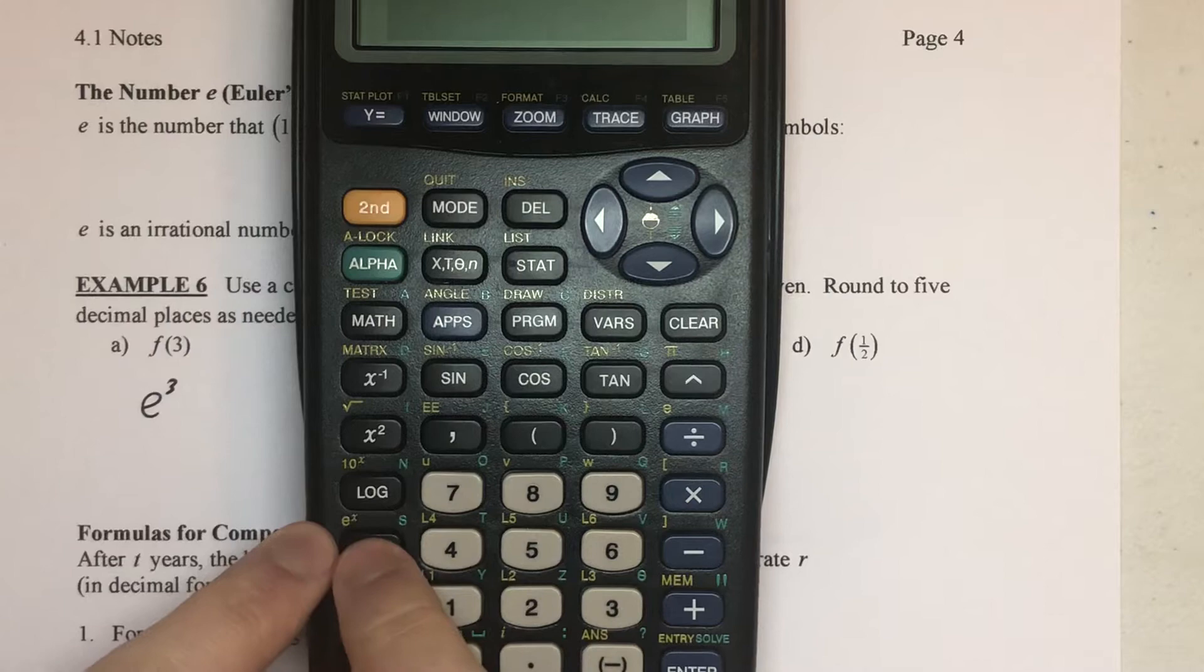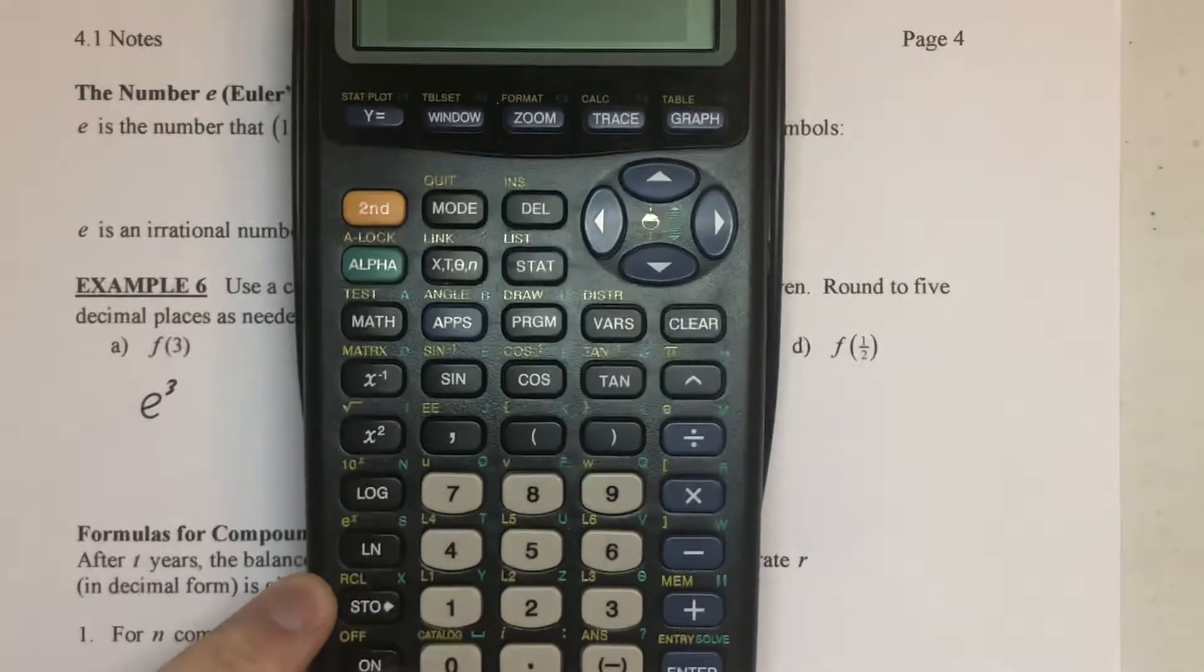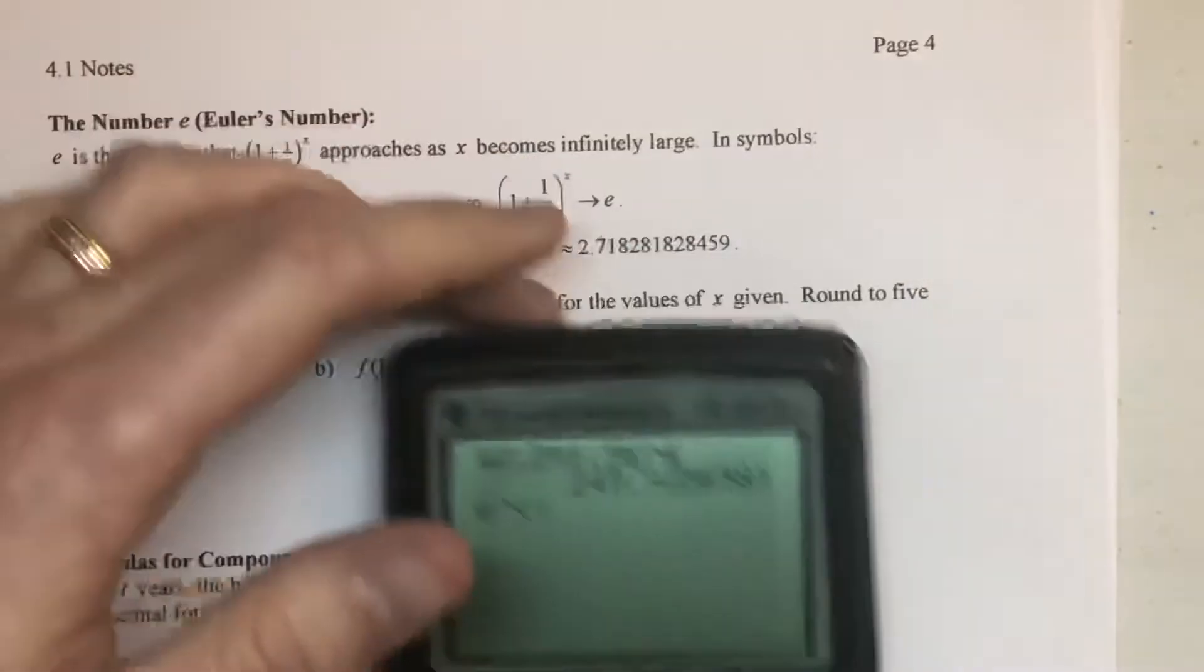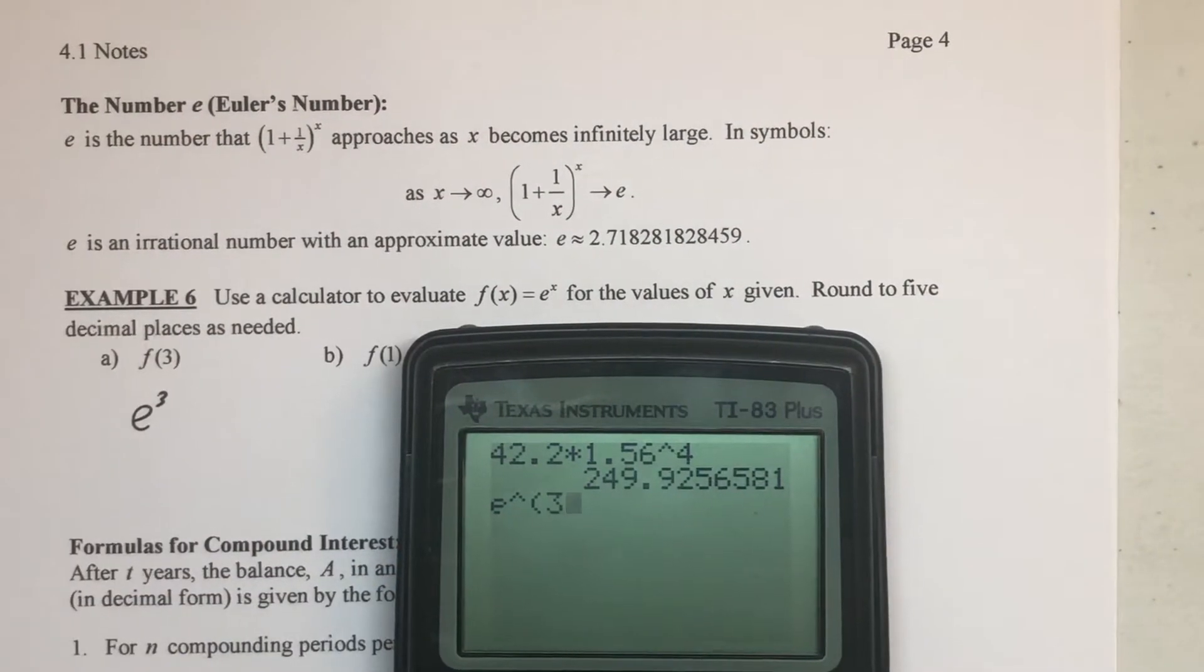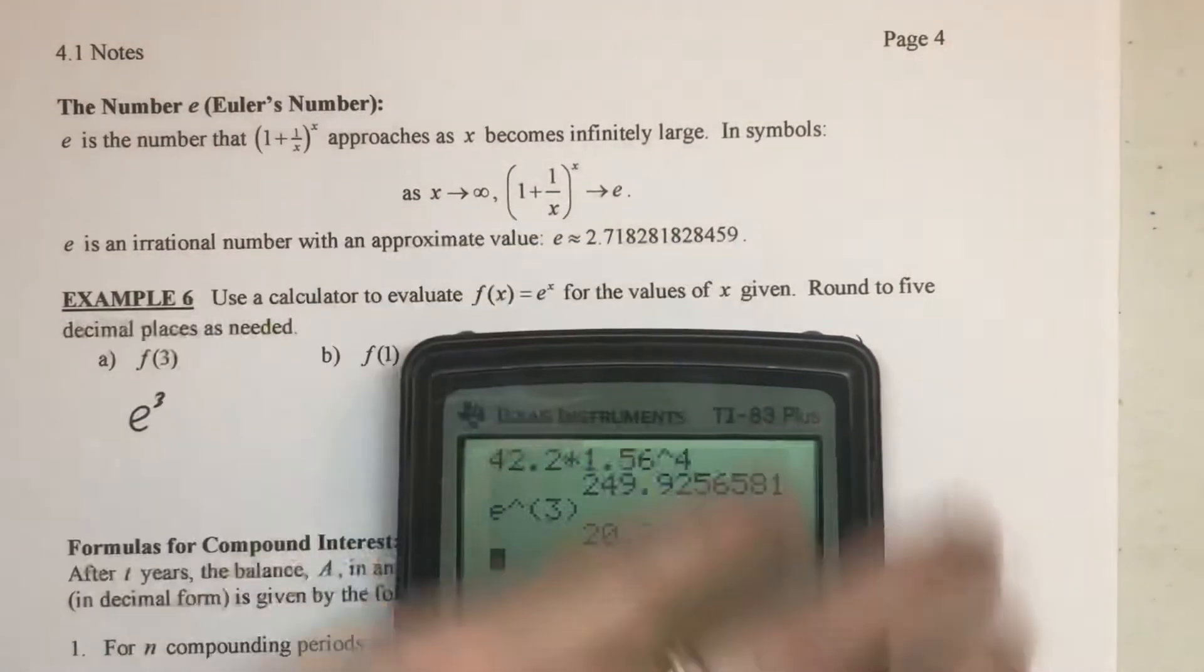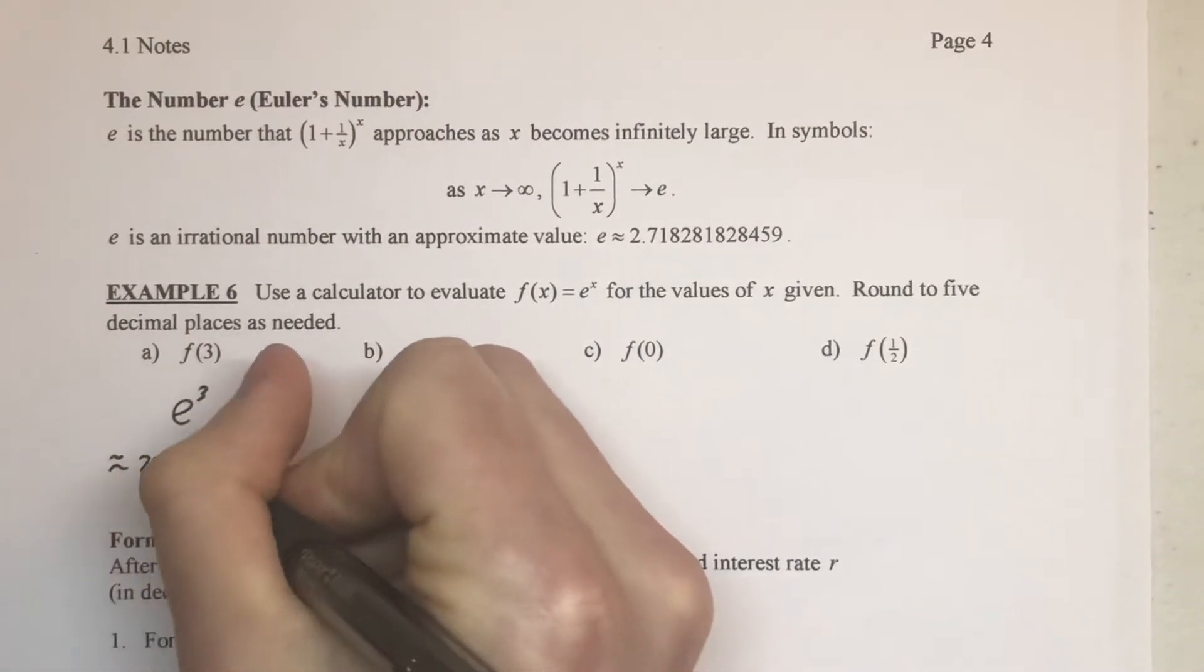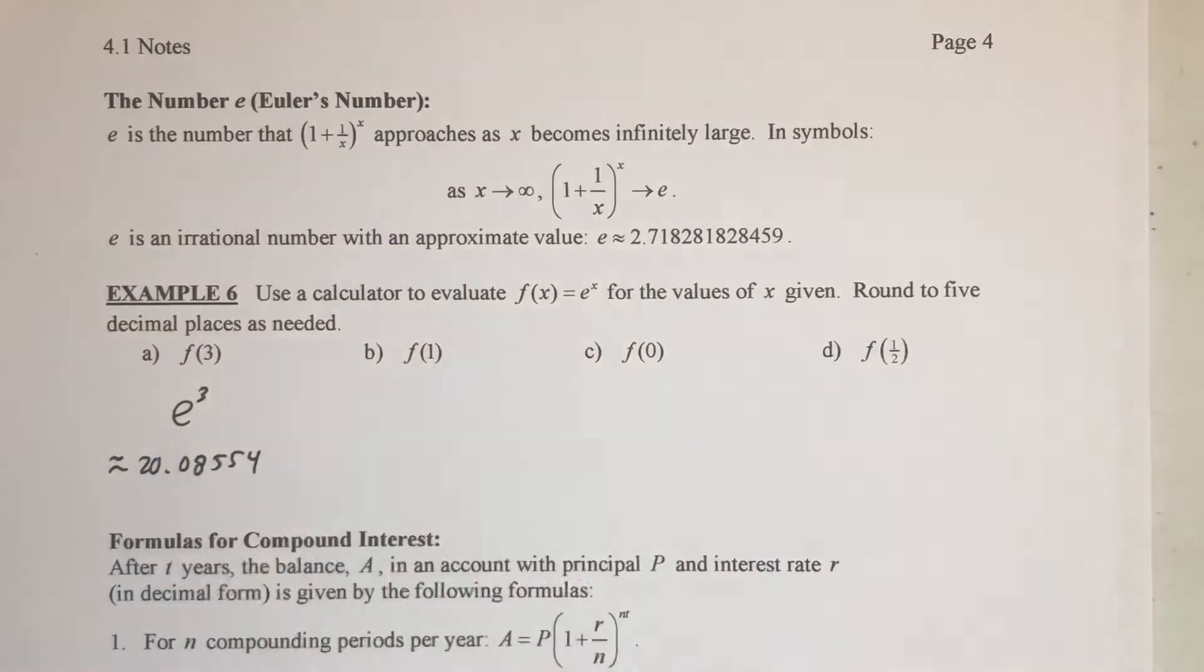you should somewhere have a little e to the x and maybe the shift of your ln button, which is a button or as a symbol we'll talk about in the next section, ln. So I'm just gonna hit the second button and ln, that's putting on my calculator, e to the, and then I'll type the 3 and hit enter. And I'll get a decimal that I'll approximate here to five places. So e to the third is approximately 20.08554.